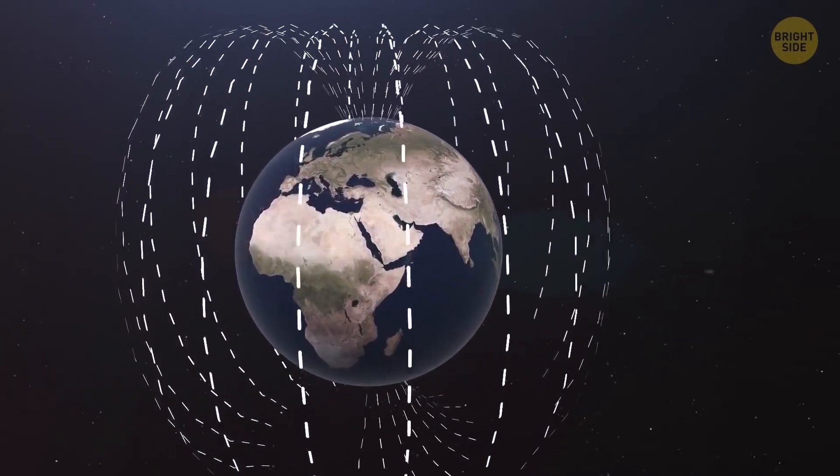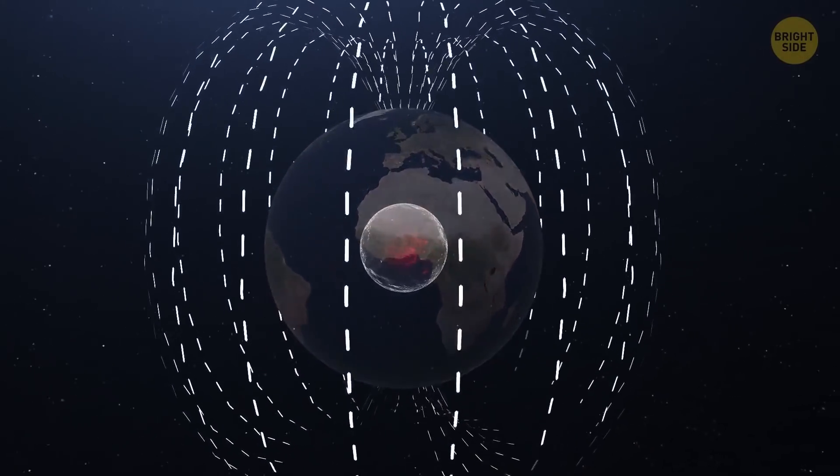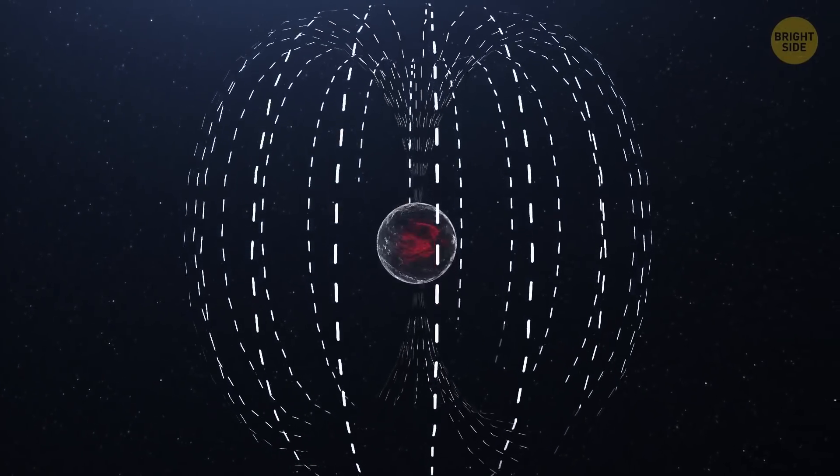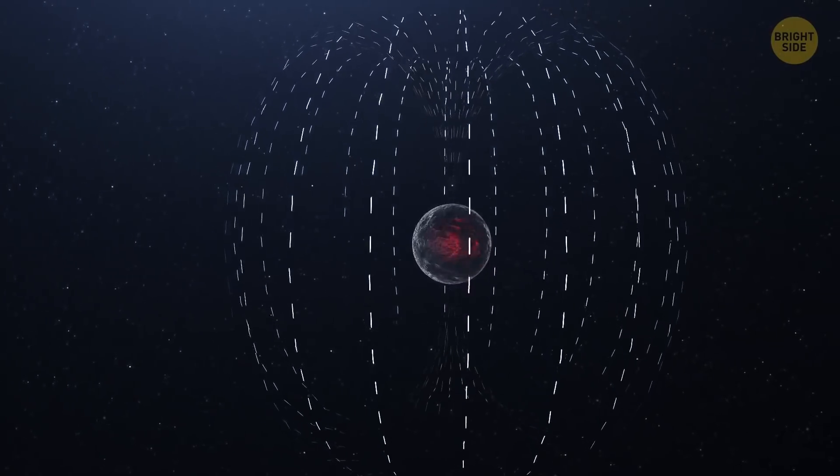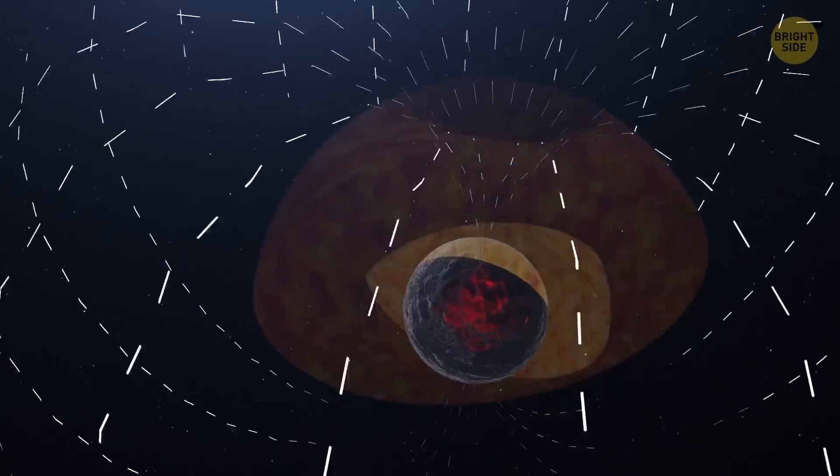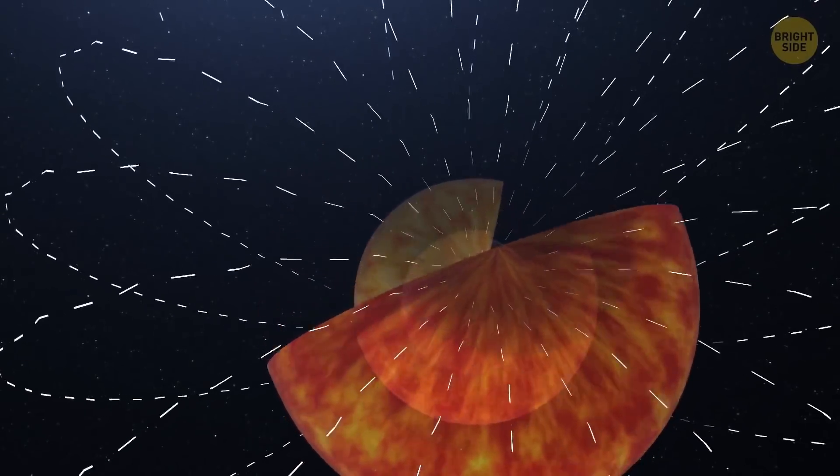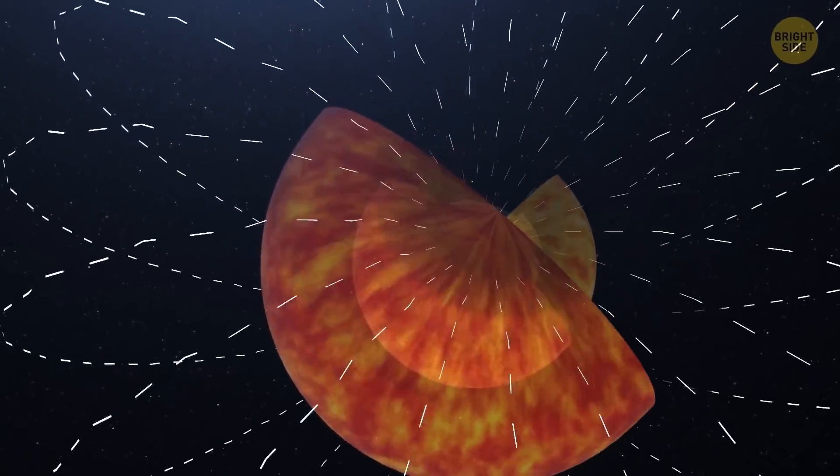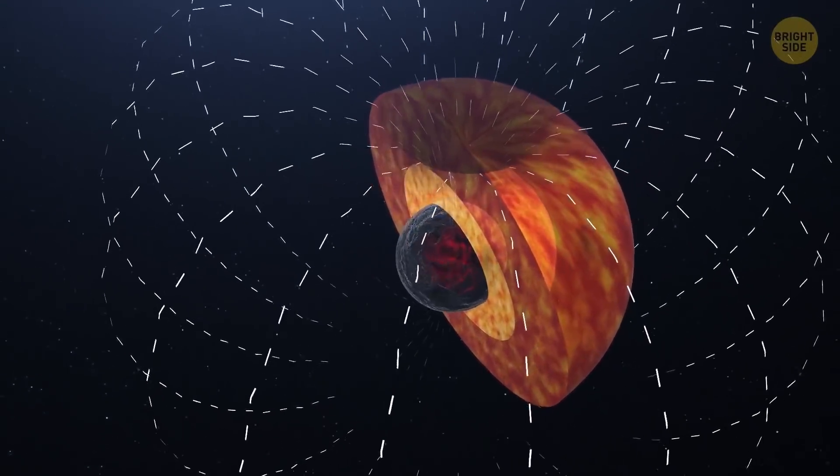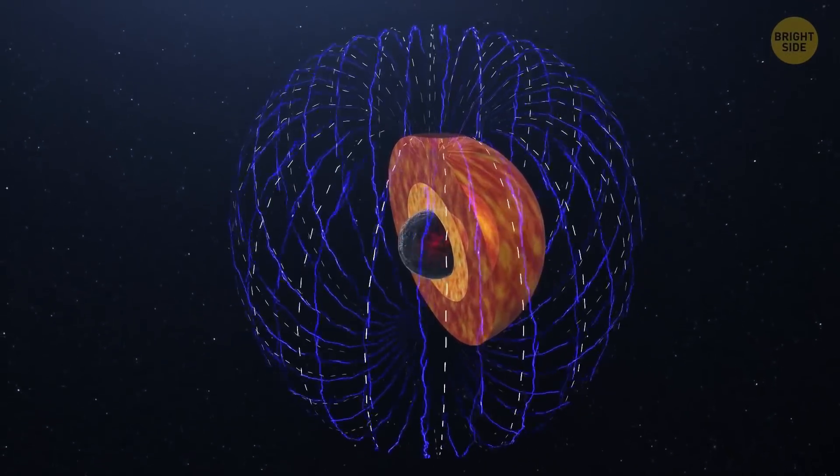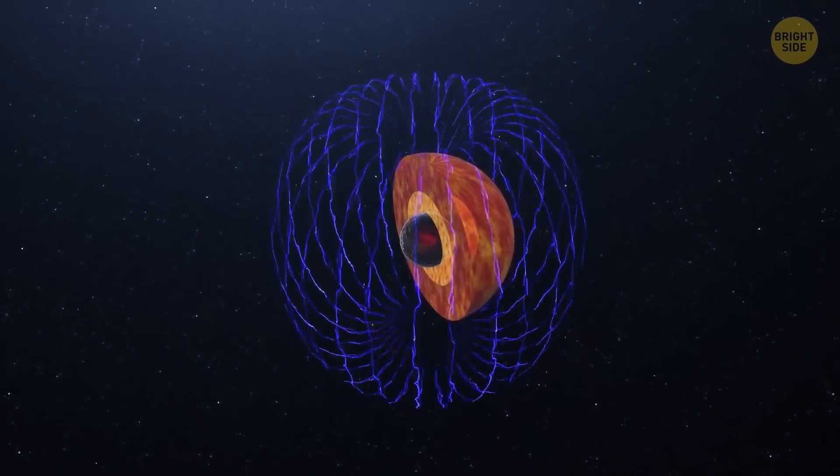Now, you may ask, what does the geomagnetic field have to do with the red-hot core of the planet? Well, the thing is that this very field is created by the Earth's core. You don't notice it, but when the planet spins, the speed of its solid inner core and the speed of its liquid outer core are different. As a result, the speed difference creates electric currents, which in turn generate the geomagnetic field.